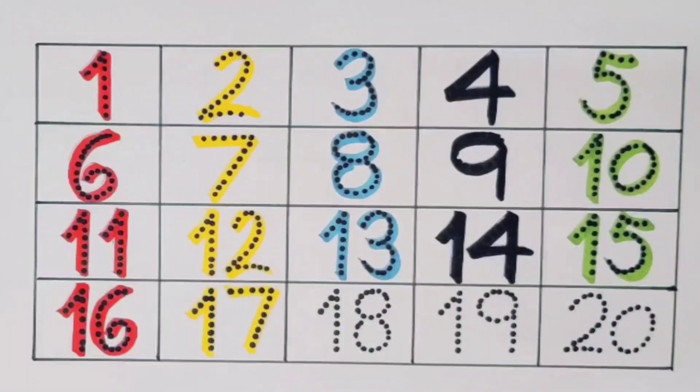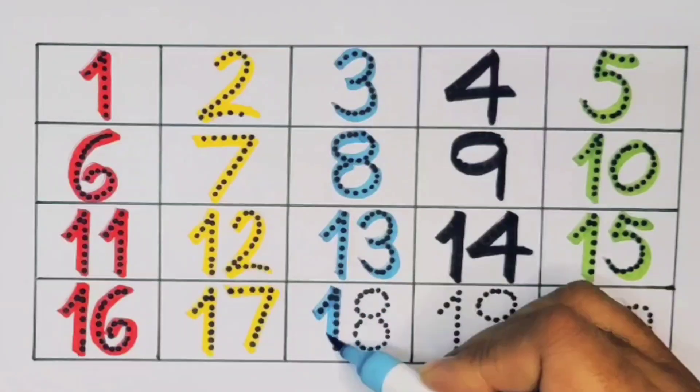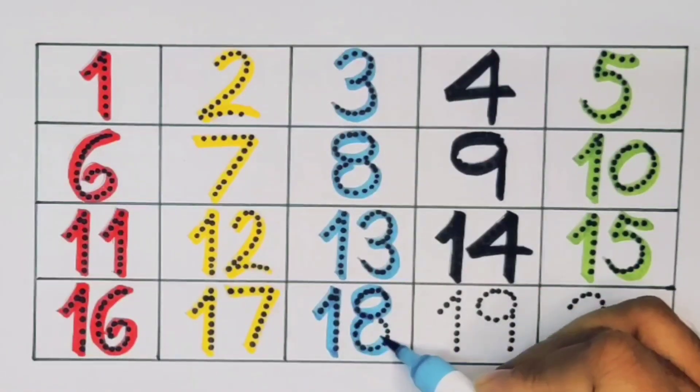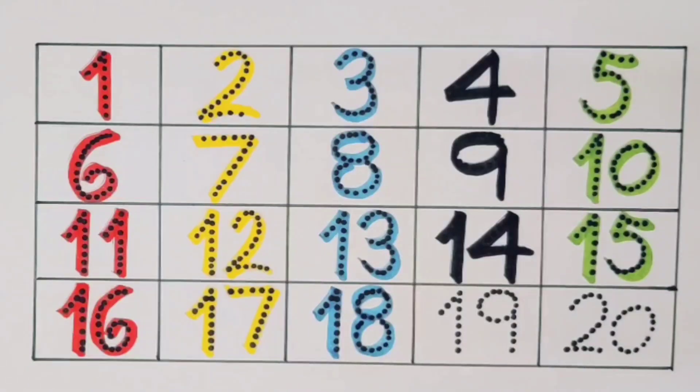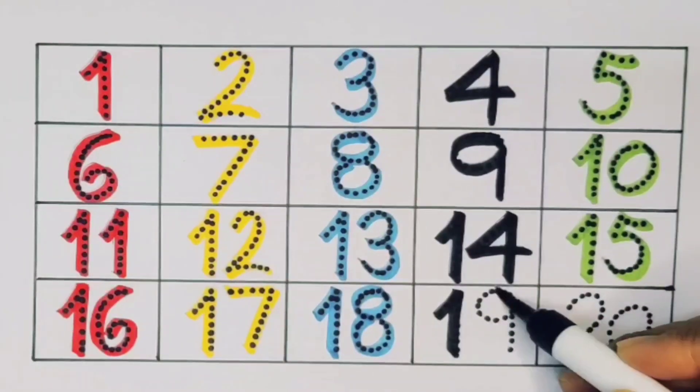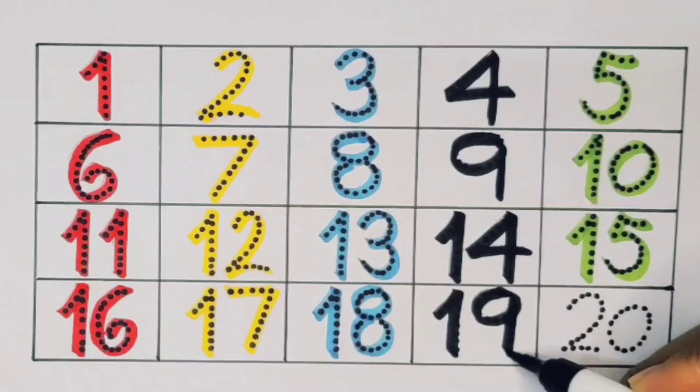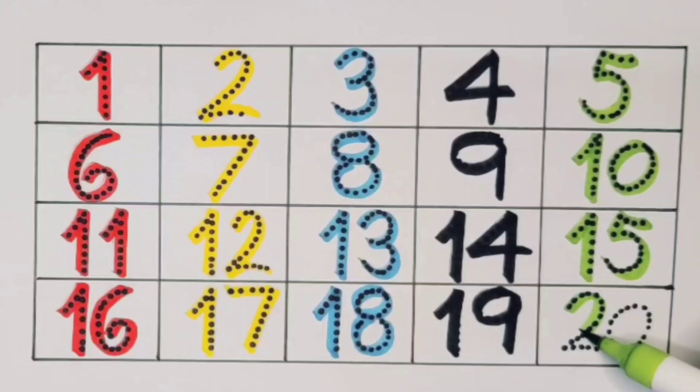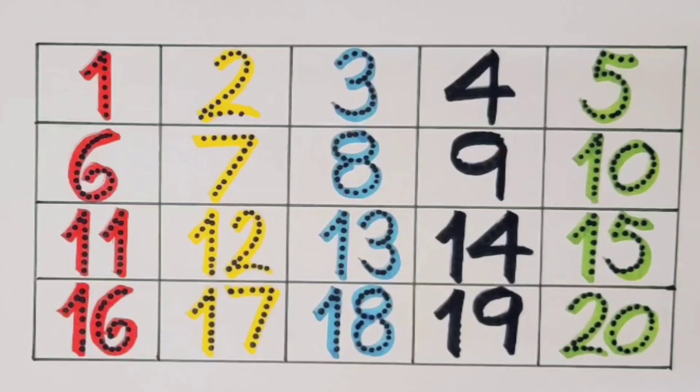Next kids, eighteen. One eight, eighteen. Number eighteen. Next kids, nineteen. One nine, nineteen. Number nineteen. Next kids, twenty. Two zero, twenty. Number twenty. What we learned?